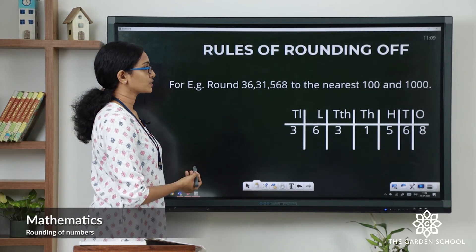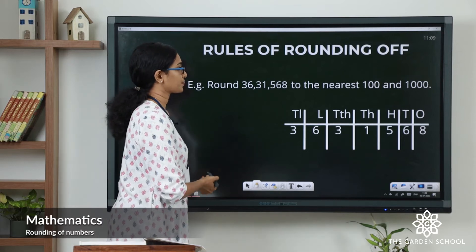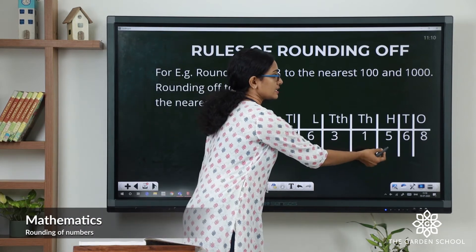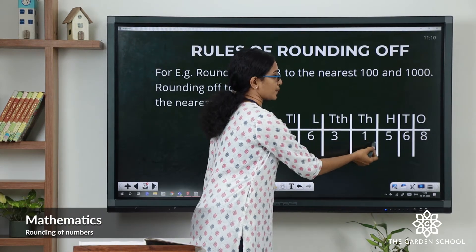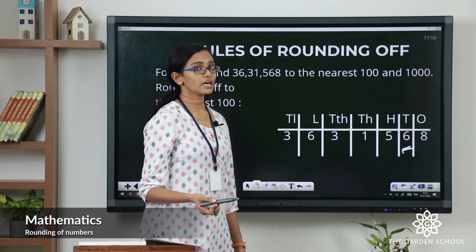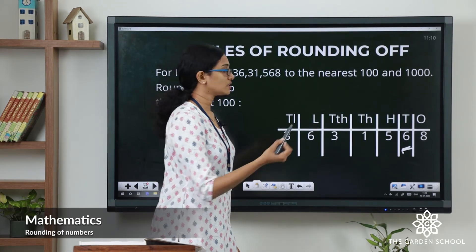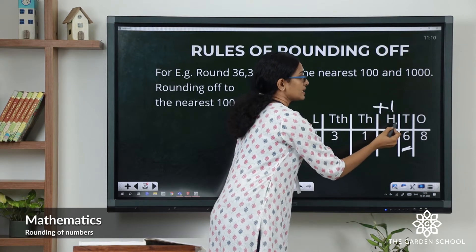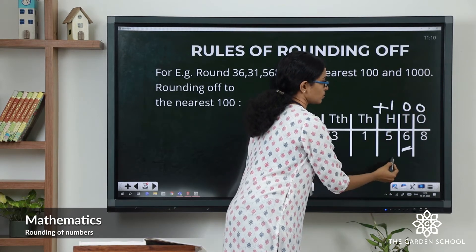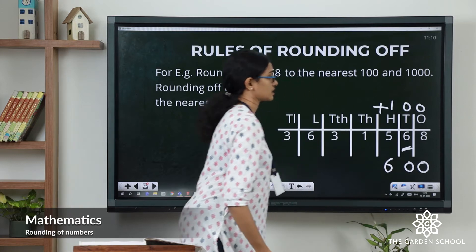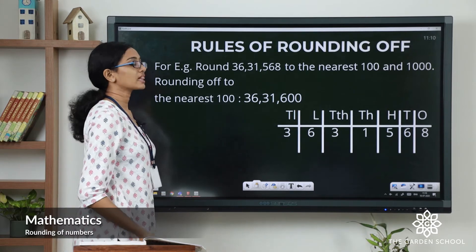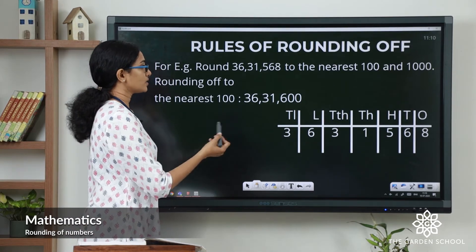Let's see one example. Round thirty-six lakh thirty-one thousand five hundred sixty-eight to the nearest hundred and thousand. Let's round this off to the nearest hundred first. The rounding digit is the hundreds digit, which is 5. The digit to the right of it is the tens digit, which is 6. Since it is 5 or more than 5, we add 1 to the rounding digit, then change all the digits to the right of it to zeros. So 5 becomes 6, and the tens and ones become zero — giving six hundred. This number rounded off to the nearest hundred is 36 lakh thirty-one thousand six hundred.